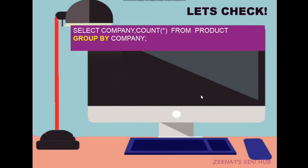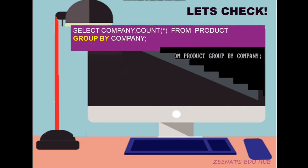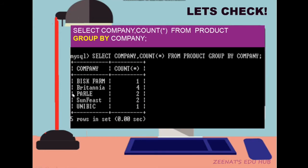Let's see this query: SELECT company, COUNT(*) FROM product GROUP BY company. Here, after SELECT, company and COUNT(*) are two columns to be displayed from the product table, and records are grouped and counted on the basis of company. You can see that five rows are displayed in output as there are five companies, and the number of products is counted and displayed company-wise in the next column.